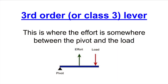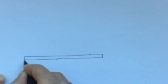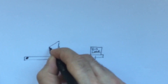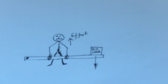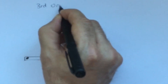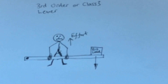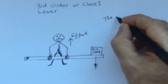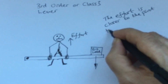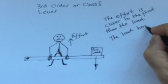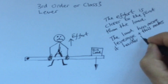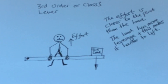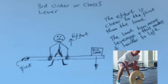A third order or class three lever is where the effort is somewhere in the middle between the pivot and the load. A man put a big load on the end of a stick — the stick was pivoted at the other end — and he decided to lift it somewhere in the middle, but he found it really hard. In fact, the weight felt heavier than when he actually put it on the end of the stick. This was because he turned it into a third order lever, where the load was further away from the pivot than his effort — the load had more leverage than the effort. This is something that weight trainers use.